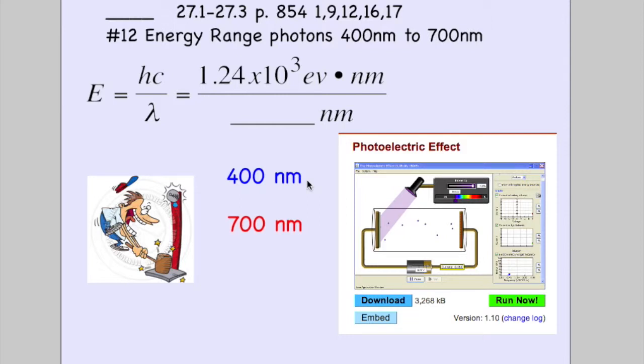12. What is the energy range in EVs of photons in the visible spectrum of wavelength 400 nanometers to 700 nanometers?